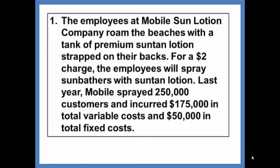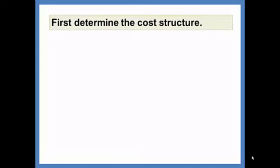The employees at Mobile Sun Lotion Company roam the beaches with a tank of premium suntan lotion strapped on their backs. For a $2 charge, the employees will spray sunbathers with suntan lotion. Last year, Mobile sprayed 250,000 customers and incurred $175,000 in total variable costs and $50,000 in total fixed costs.